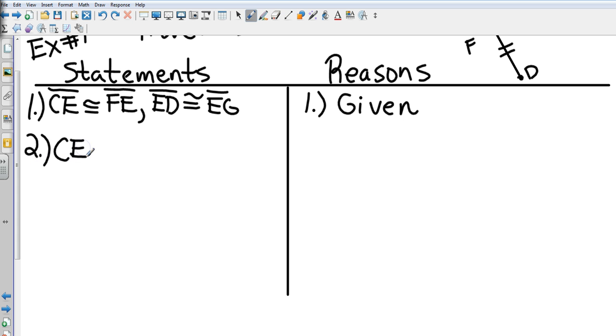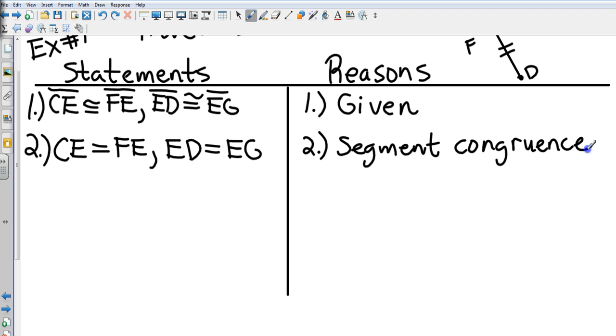Okay, so if they're congruent in step 1, they're equal in step 2, and that is because of segment congruence. Or if you wanted to say it another way, if two segments are congruent then they are equal.